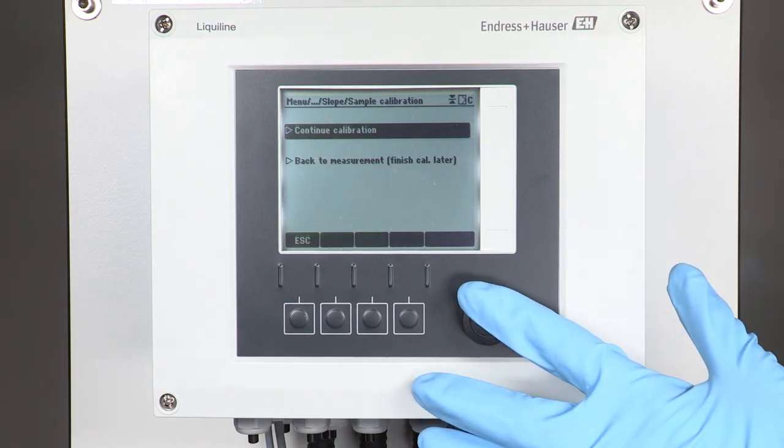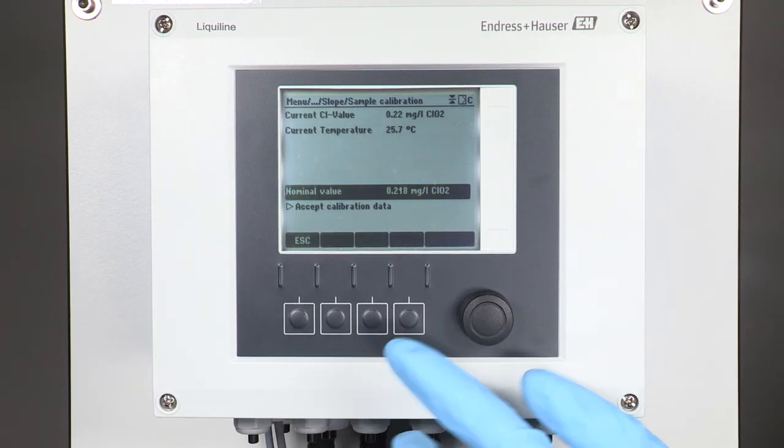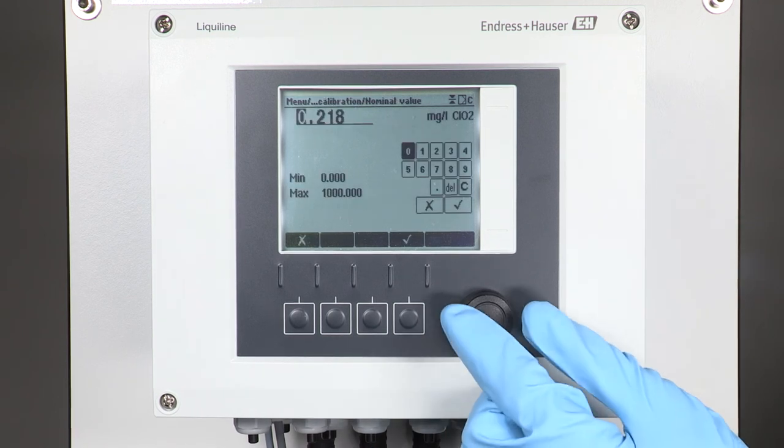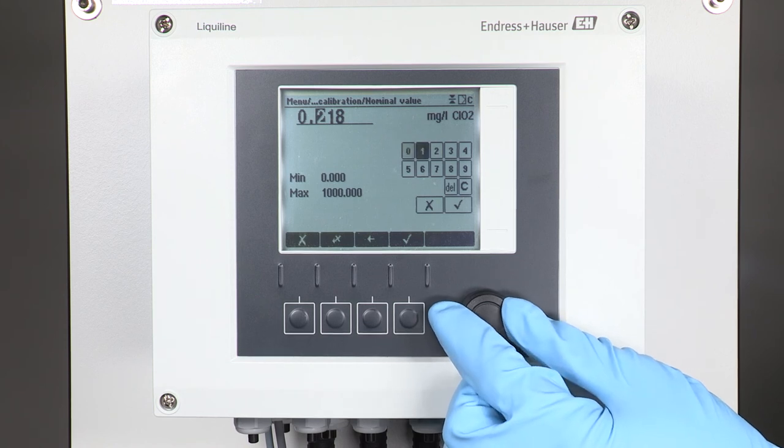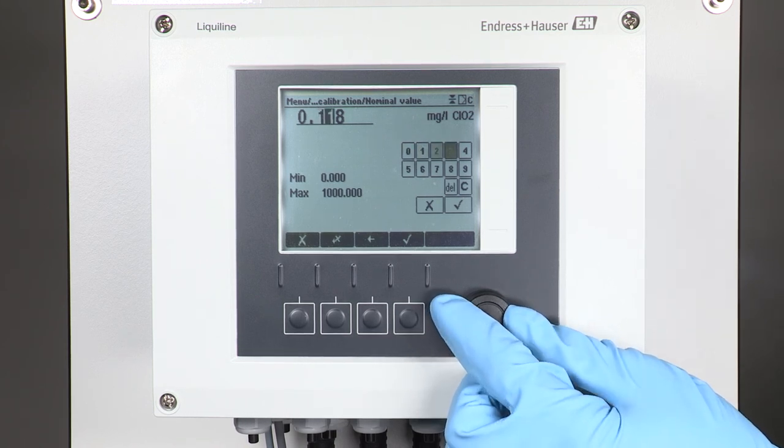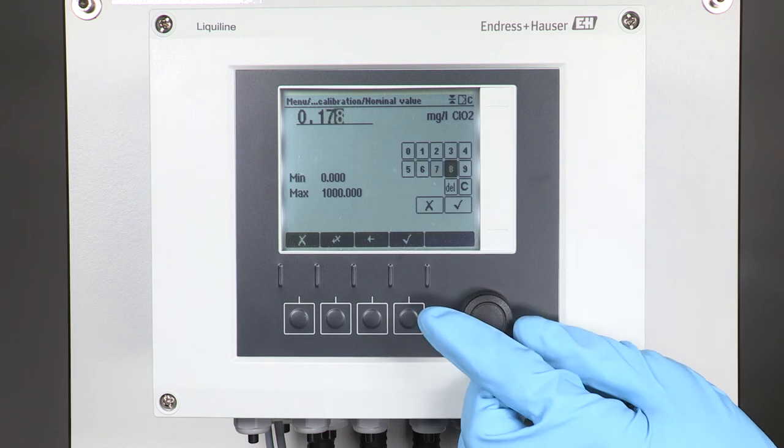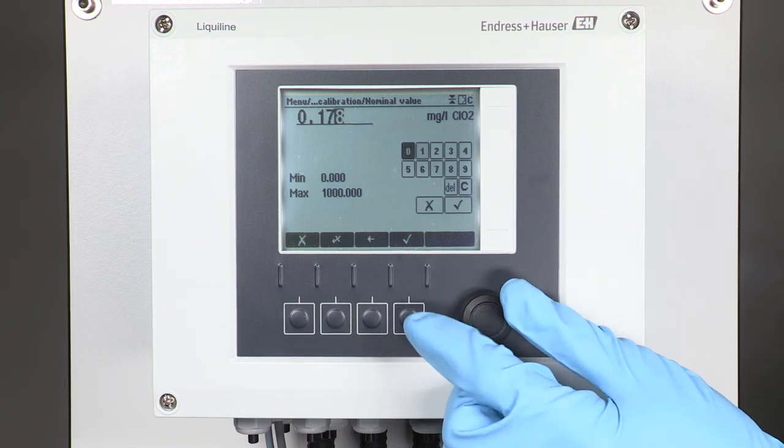We continue with the liquid line by entering the Chlorine Dioxide value which was shown on the photometer. Once the new slope was found to be within the allowed range, the transmitter allows you to store it in the CCS50D sensor head for adjustment.